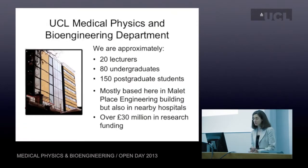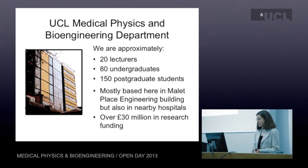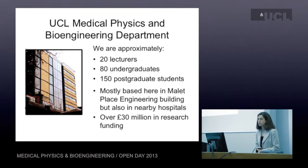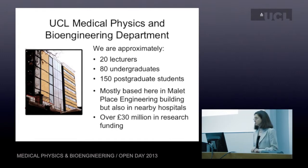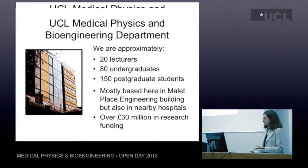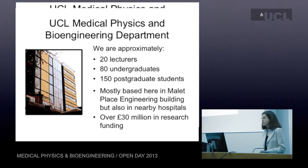I'm going to tell you a little bit about our department. We have about 20 lecturers — I teach MRI. We usually have about 80 undergraduates and about 150 postgraduate students. We're based in the Mallet Place engineering building, but also spread around nearby hospitals. Our department has around £30 million in research funding, making it a very research-active department.